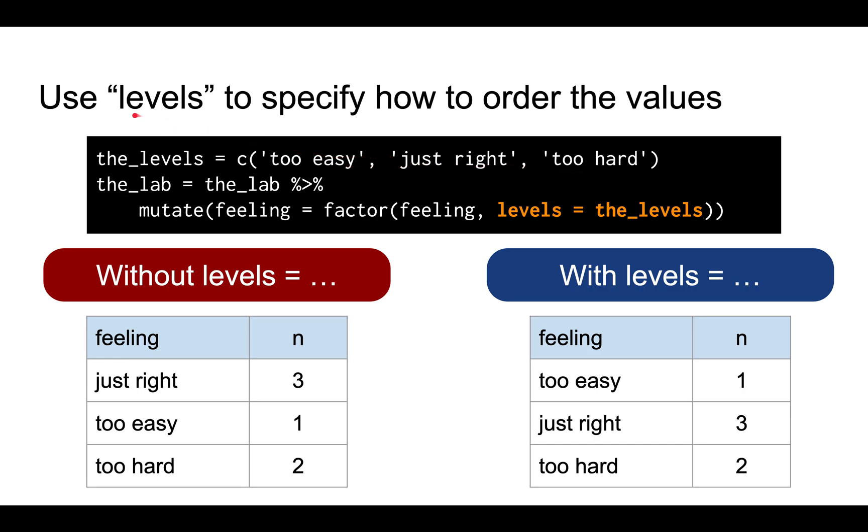So you can use the levels parameter to specify how to order the values of this factor. So you tell them, okay, order them using too easy, then just right, then too hard.